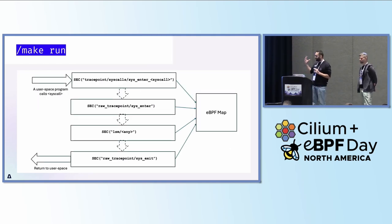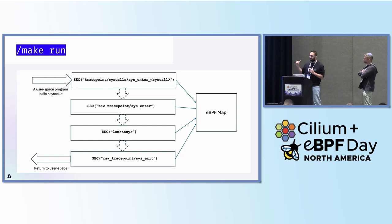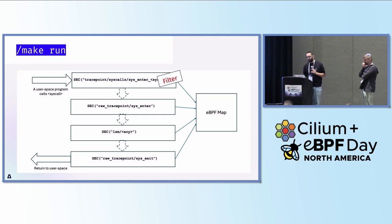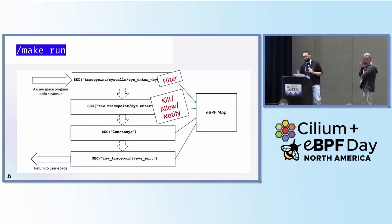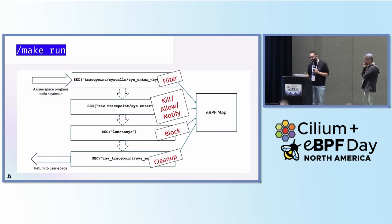So here's how we designed this solution. There is a user space program making a system call, and four different eBPF programs take action. First, an eBPF program for that specific syscall within a trace point does filtering — capabilities, arguments passed, and so on. Then the raw trace point eBPF program applies actions like killing the process, allowing, or notifying. If I want to block the action, I write that into the eBPF map, and then within the LSM I can block. The raw trace point exit hook does all the cleanup.